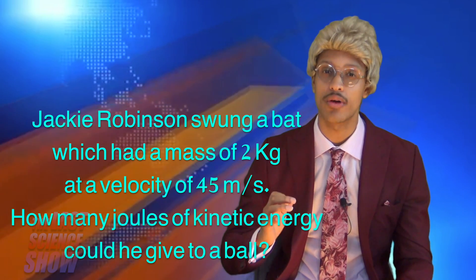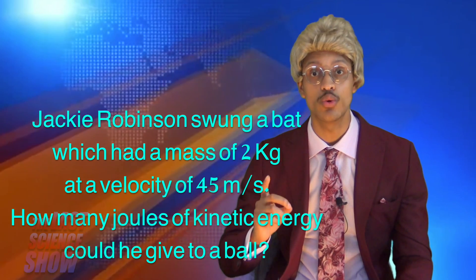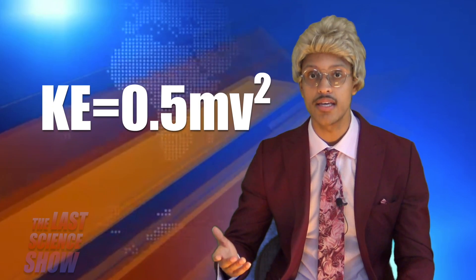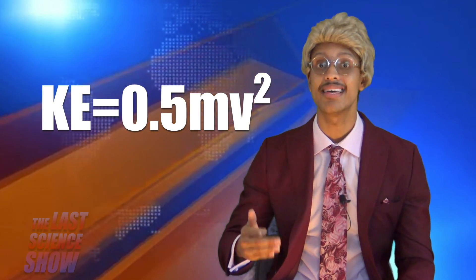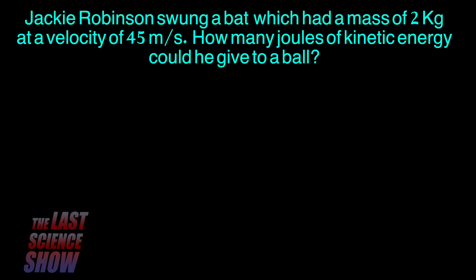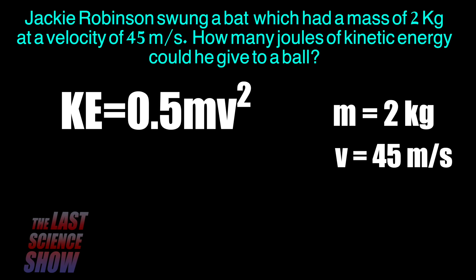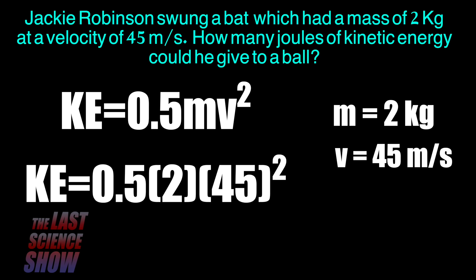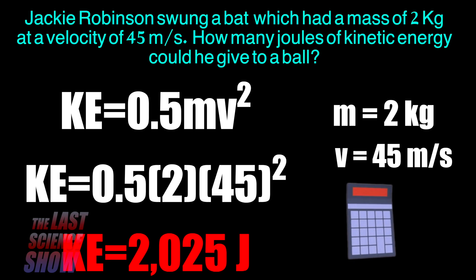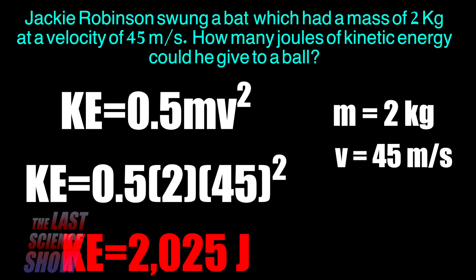Let's start with this problem. Jackie Robinson swung a bat which had a mass of two kilograms at a velocity of 45 meters per second. How many joules of kinetic energy could he give to a ball? We need our equation: KE equals one-half mass times velocity squared. Plug in the values they gave you. The mass is two kilograms and the velocity is 45 meters per second. All you have to do is plug those two values into the kinetic energy formula, and you'll get your answer: 2,025 joules. Remember, the units must be joules because all energy is measured in joules.